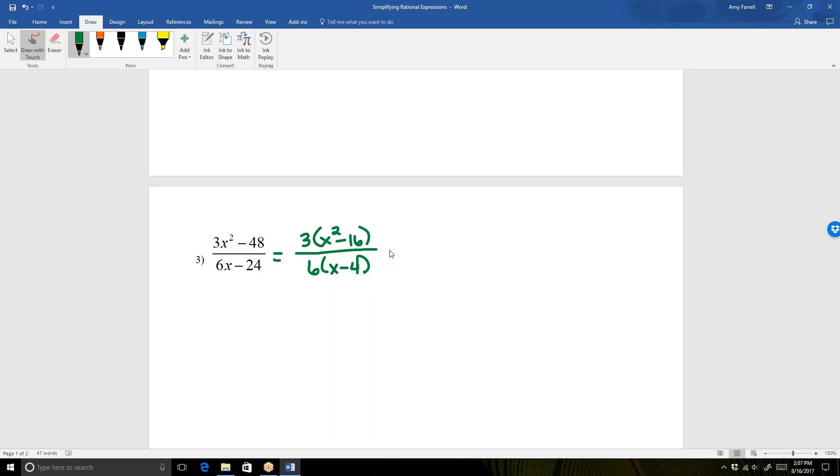Now the numerator can be factored further. X squared minus 16, you may recognize that as a difference of squares. And so we can factor that as x plus 4 times the quantity x minus 4. And I'm going to go ahead and just copy my denominator. Now just as we've done in the first two examples, we're going to cancel any common factors in the numerator and denominator. I see the numerator has a factor of x minus 4, and so does the denominator. So I'm going to cancel those.